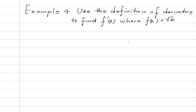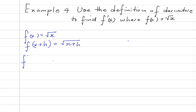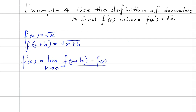Example 4 says, use the definition of derivative to find f prime of x, where f of x is equal to the root of x. So f of x is equal to the root of x, and f of x plus h would be equal to the root of x plus h. By definition, f prime of x would be equal to the limit as h approaches 0 of f of x plus h minus f of x, all over h.